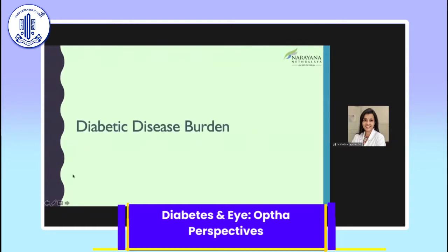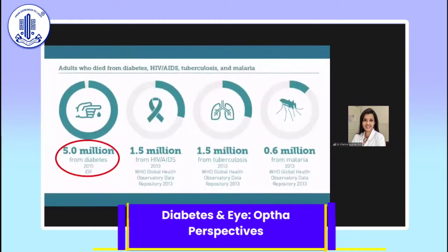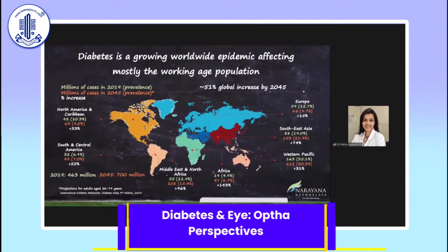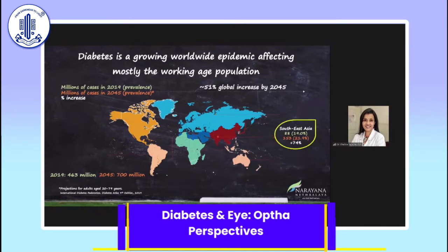Coming to the disease burden itself, we have a very large population affected by this condition — more than all the other infective conditions put together that we were so worried about in the last few decades. Going forward, diabetes will be our biggest fear. This map shows the prevalence currently and expected millions of cases by 2045. Looking at Southeast Asia, we can expect an increase of close to 20%, with a huge number expected to be affected by the disease and its complications.